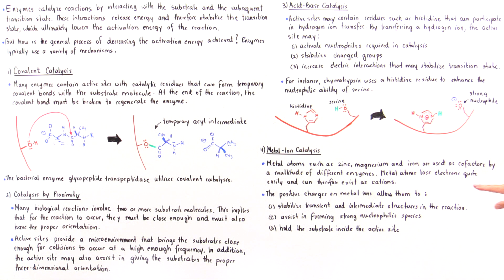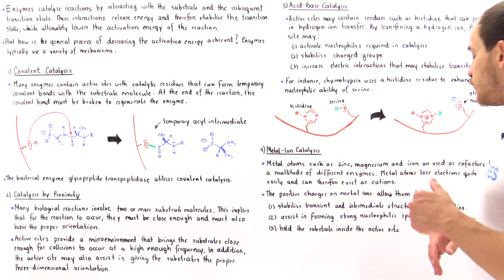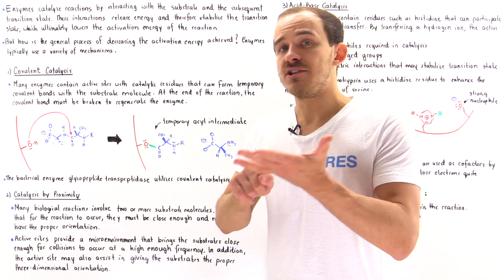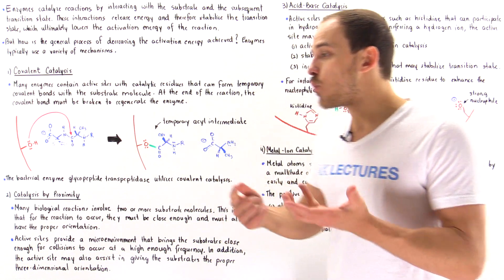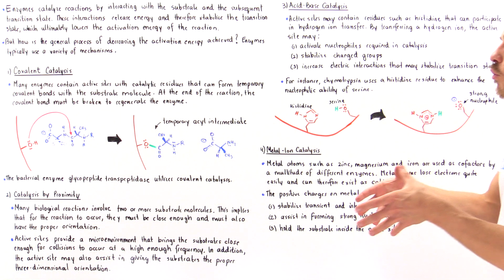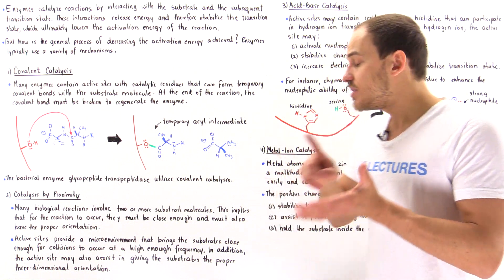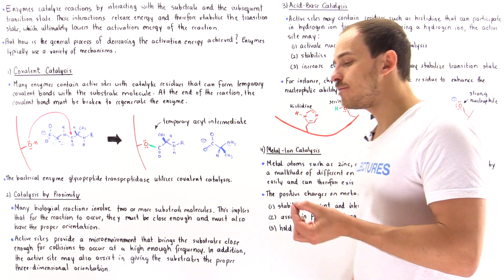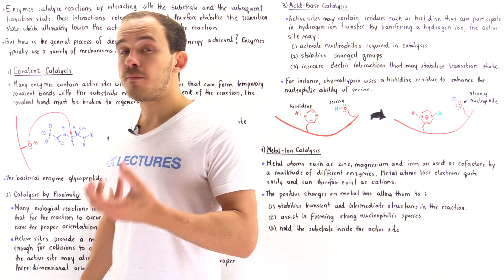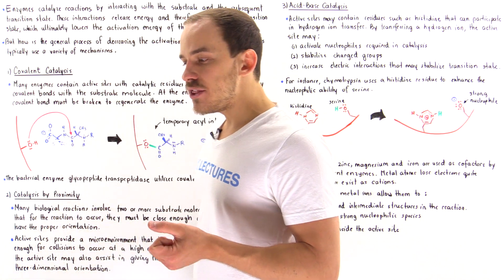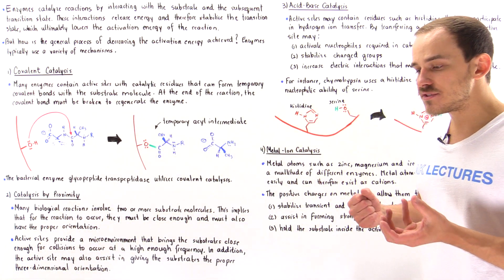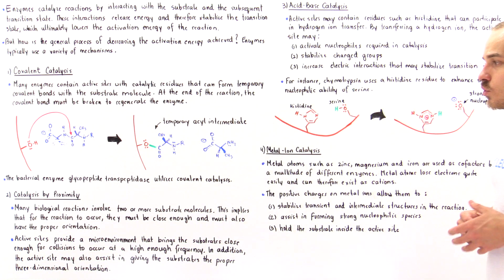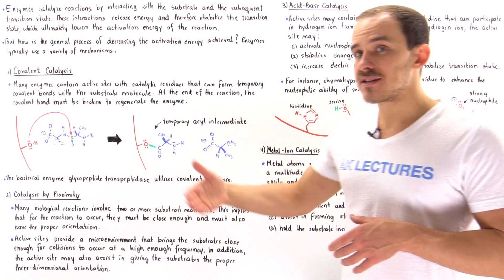The positive charges on metal ions can be used to basically stabilize the transient transition states as well as the intermediate molecules formed within that active site. They can also be used to assist in actually forming a strong nucleophile. For instance, when we discuss carbonic anhydrase, we'll see that inside the active site there is a zinc metal atom that is used to actually form a strong nucleophile — the hydroxide nucleophile.